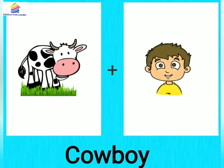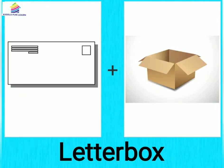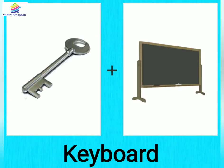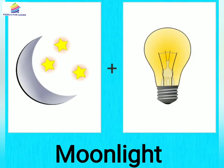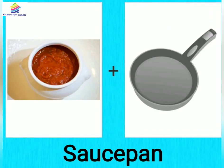Cow plus Boy becomes Cowboy. Letter plus Box becomes Letterbox. Key plus Board becomes Keyboard. Moon plus Light becomes Moonlight. Sauce plus Pan becomes Saucepan.